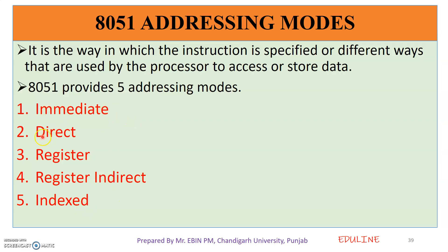The five addressing modes are: Immediate, Direct, Register, Register Indirect, and Indexed. So, there are 5 addressing modes in the case of the 8051 microcontroller.